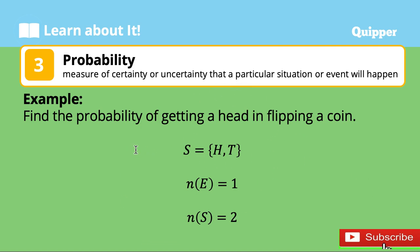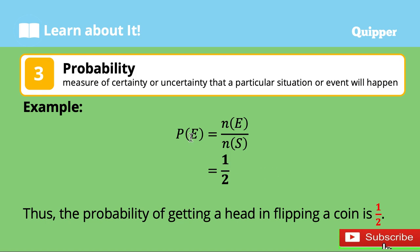For example, find the probability of getting a head in flipping a coin. The sample space in flipping a coin is equal to head and tail, meaning there are two possible results. Since getting a head appears only once as an outcome of the sample space, it follows that N(E), the number of ways an event can occur, is only 1.